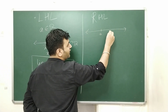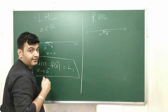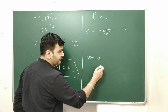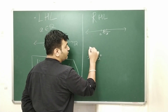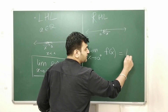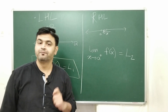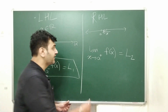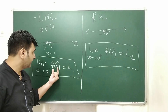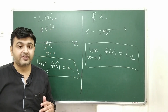The same concept goes for the right hand limit. On the real number system, you approach a from the right hand side: X is greater than a and approaching towards a. We write X approaching a plus, and then you look at the limit of the function. If the limit exists and equals l2, then l2 is the right hand limit of the function as X approaches a.